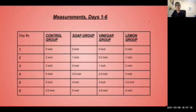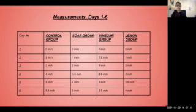Here are the measurements for days one through six. You can see that each day the plants grow by either one or half an inch on average. However, on certain days, some plants grow very little or don't grow at all. For example, on day two, the vinegar group had barely grown one-fifth of an inch in the entire first day, whereas the control group had grown two inches on its first day.